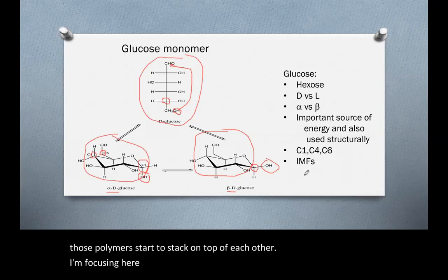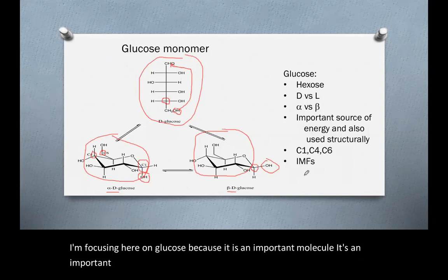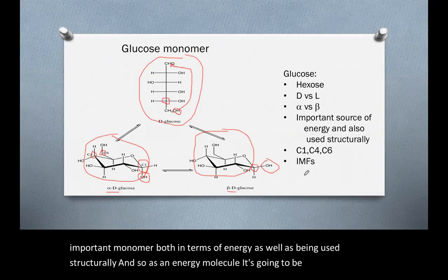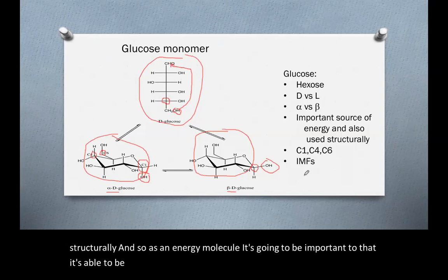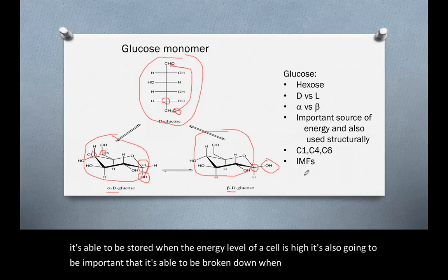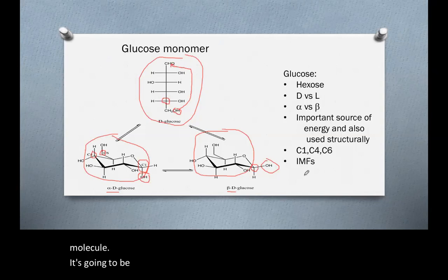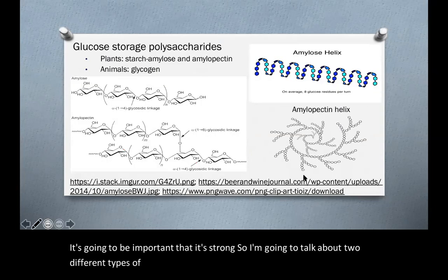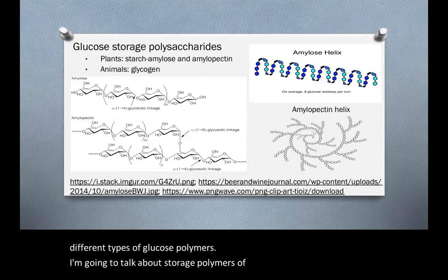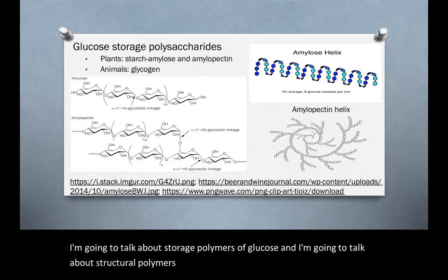I'm focusing on glucose because it is an important molecule — an important monomer both in terms of energy as well as being used structurally. As an energy molecule, it's important that it can be stored when the energy level of a cell is high, and broken down when the energy level is low so it can be used to form ATP. As a structural molecule, it's going to be important that it's strong. I'm going to talk about two different types of glucose polymers: storage polymers and structural polymers of glucose.